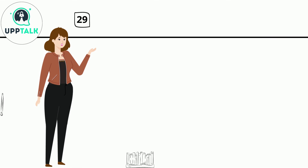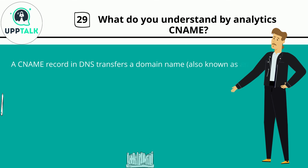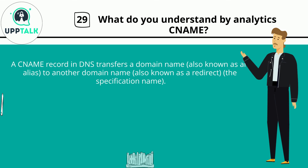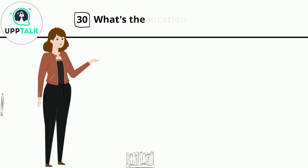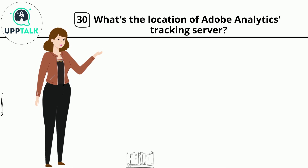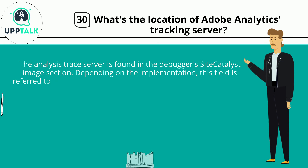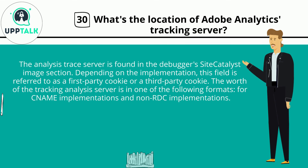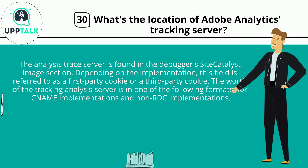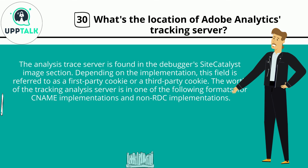Question 29: What do you understand by analytic CNAME? A CNAME record in DNS transfers a domain name, also known as an alias, to another domain name, also known as a redirect — the specification name. Question 30: What's the location of Adobe Analytics' tracking server? The analysis trace server is found in the debugger's Site Catalyst image section. Depending on the implementation, this field is referred to as a first-party cookie or a third-party cookie. The value of the tracking analysis server is in one of the following formats, for CNAME implementations and non-RDC implementations.